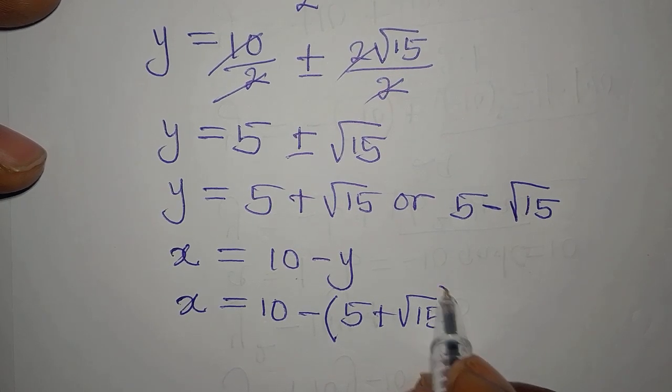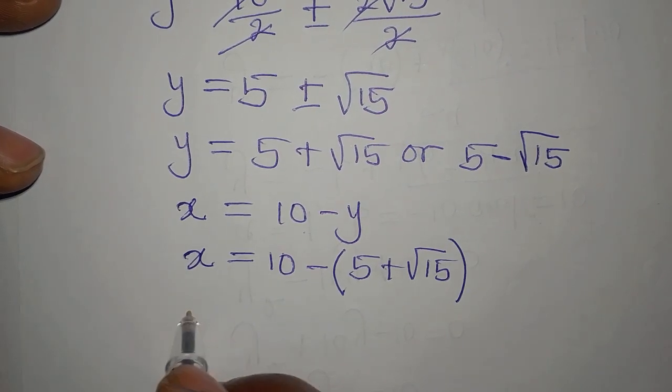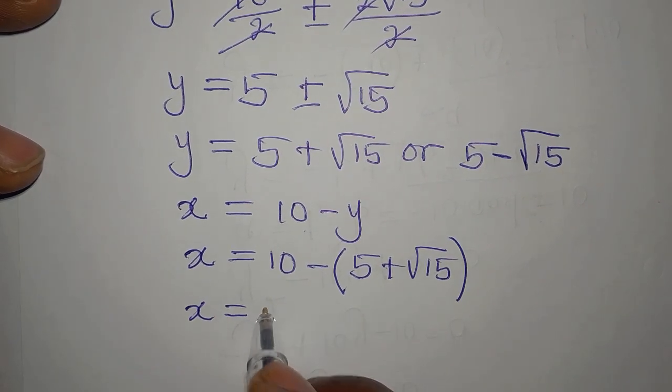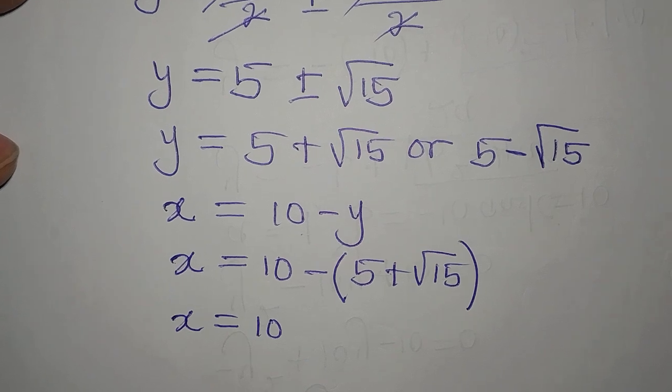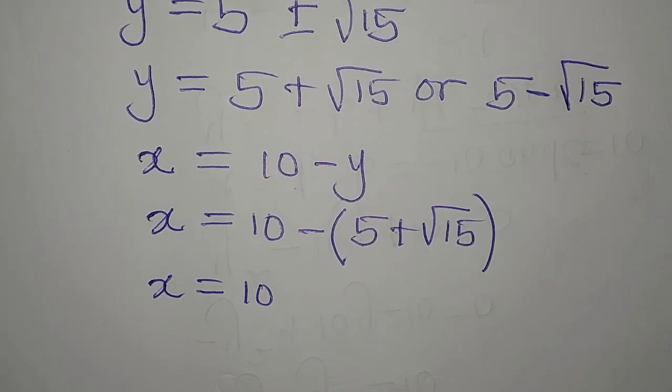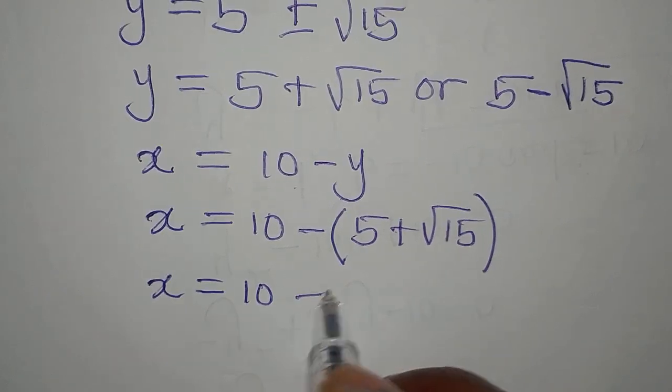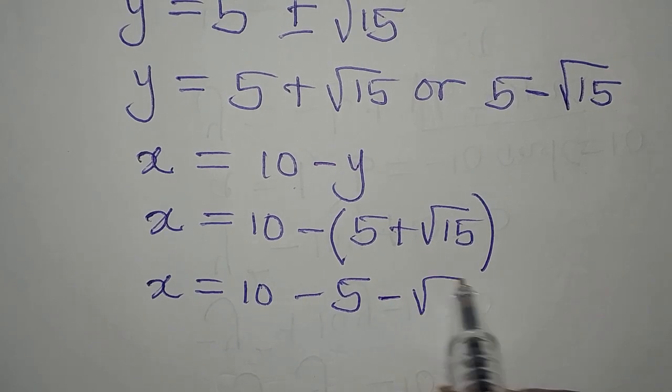Then before you simplify this, you're expected to open the bracket. So x will be 10. We have 10 minus 5. Then the negative will affect this, so we have negative root 15.